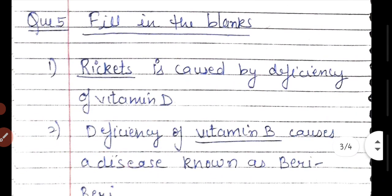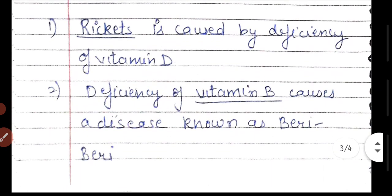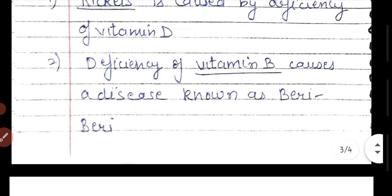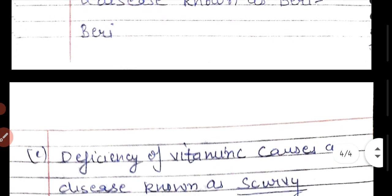Question 5 is fill in the blanks. Rickets is caused by deficiency of vitamin D — this is correct. Deficiency of vitamin B causes the disease beriberi. We have learned that if vitamin B is reduced, beriberi will occur.